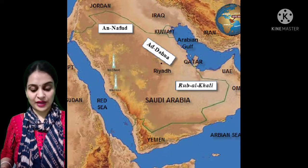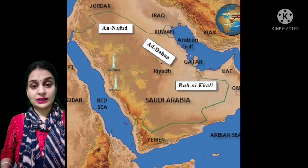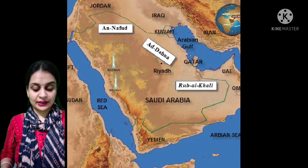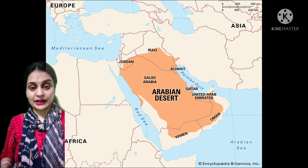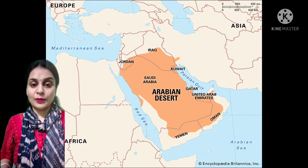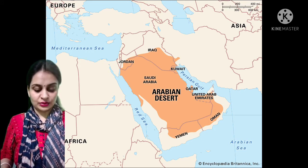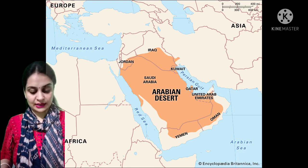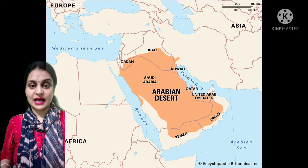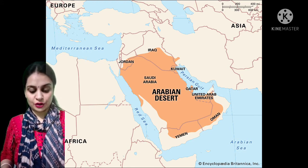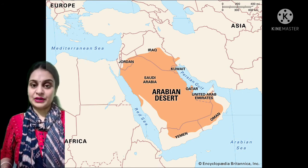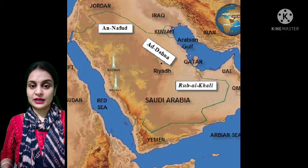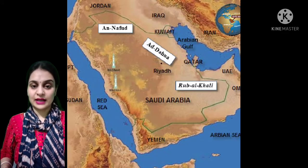Iraq and Kuwait in the north, and Qatar, United Arab Emirates and Bahrain in the east, and Oman and Yemen in the south. The Arabian Sea is in the south and the Red Sea lies in the west of this country.